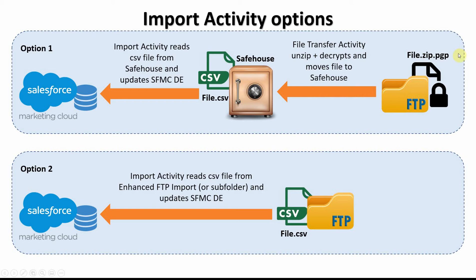If an encrypted or decrypted file comes in through file transfer into the enhanced FTP, the file transfer activity will actually unzip and decrypt it and then move it to the safe house. Then the import activity can read that particular decrypted file from the safe house and update the data into the Salesforce Marketing Cloud data extension.